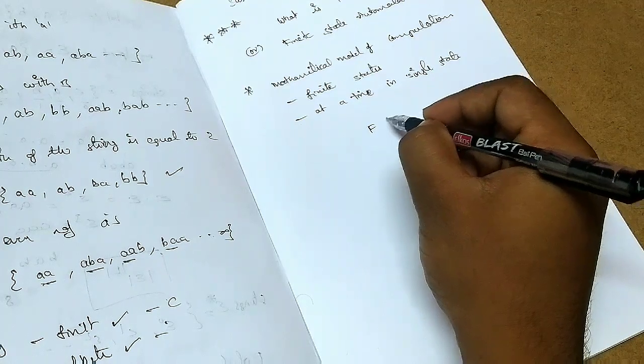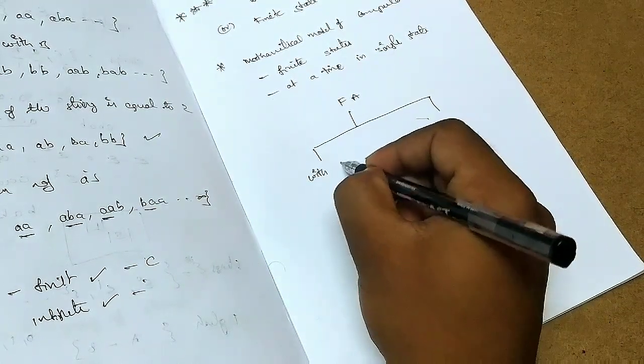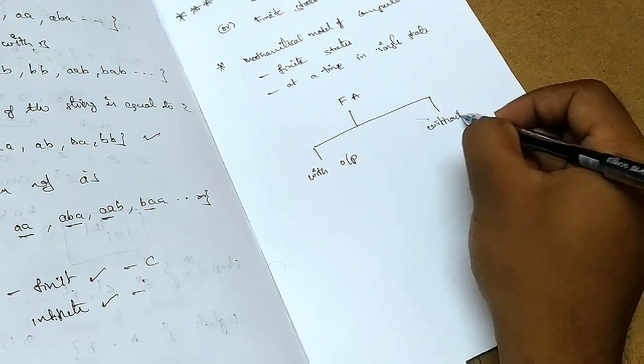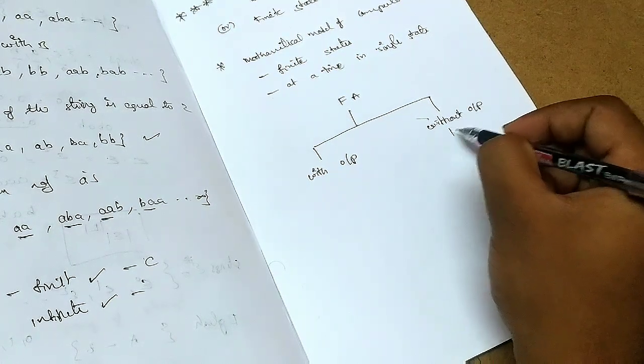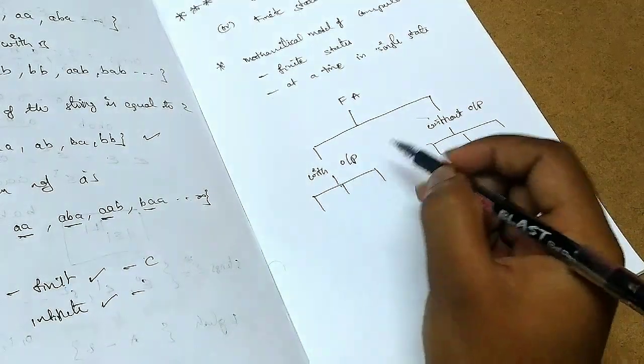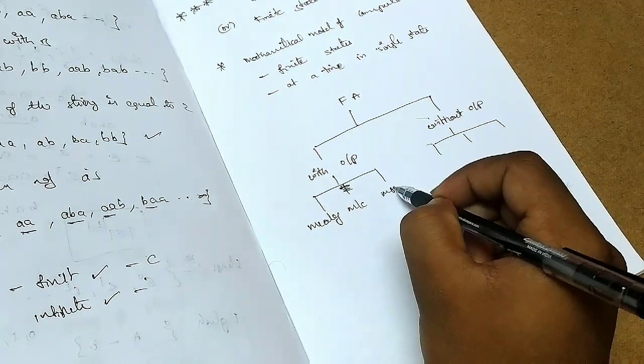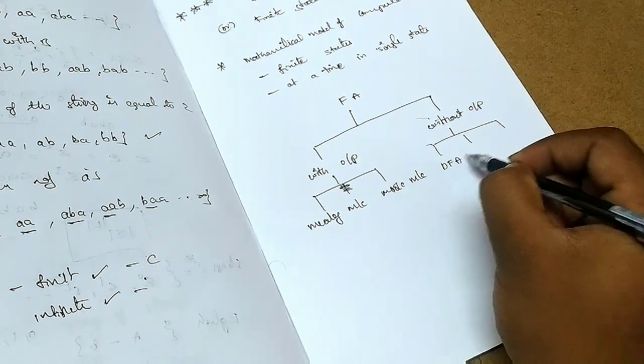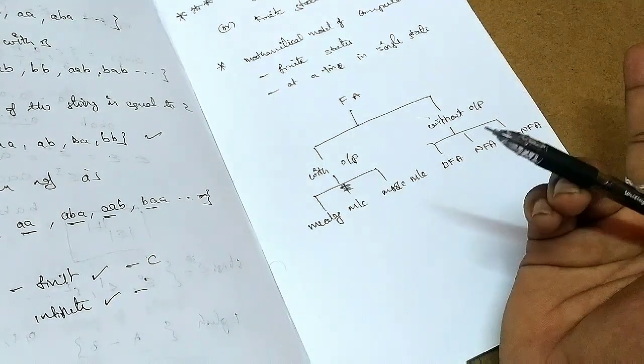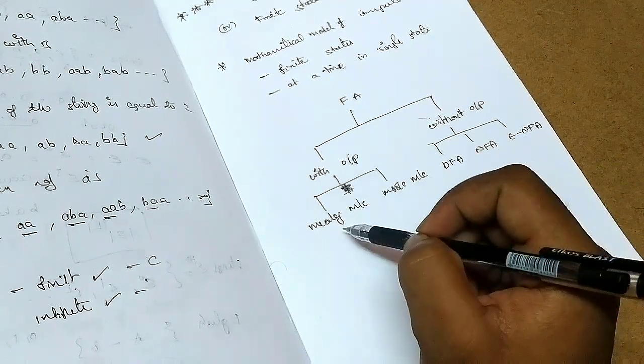Finite automata is two types. One is with output and another type is without output. These are two types only. One is Mealy machine, another is Moore machine. Finite state machine is divided by two types, one is with output and another is without output. This with output type is two types, Mealy machine and Moore machine.